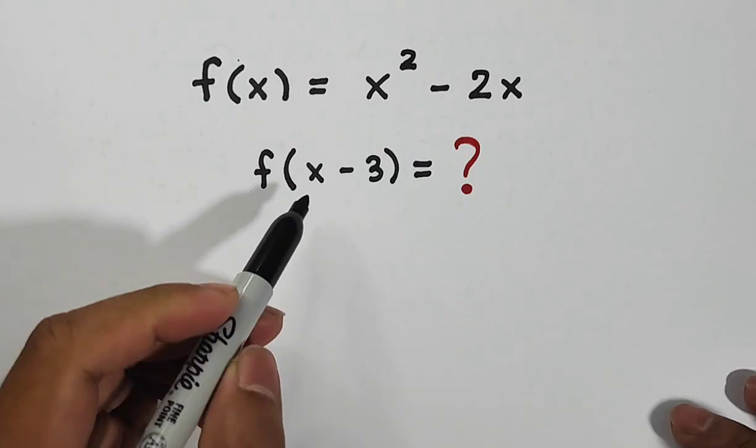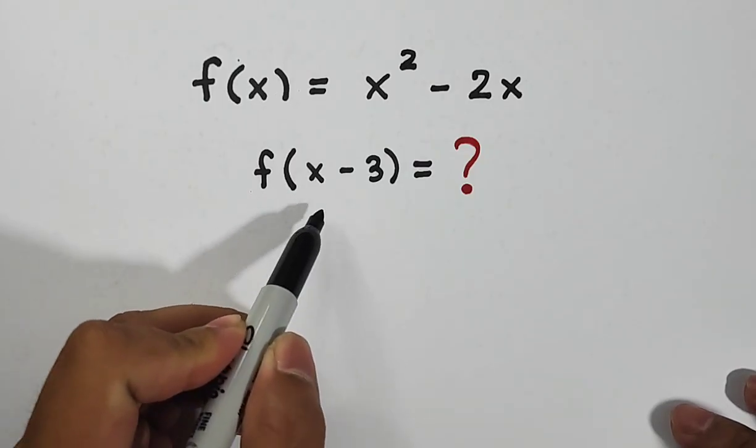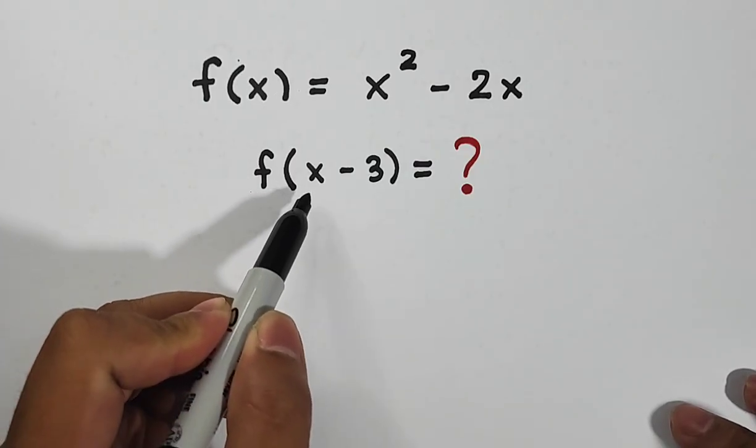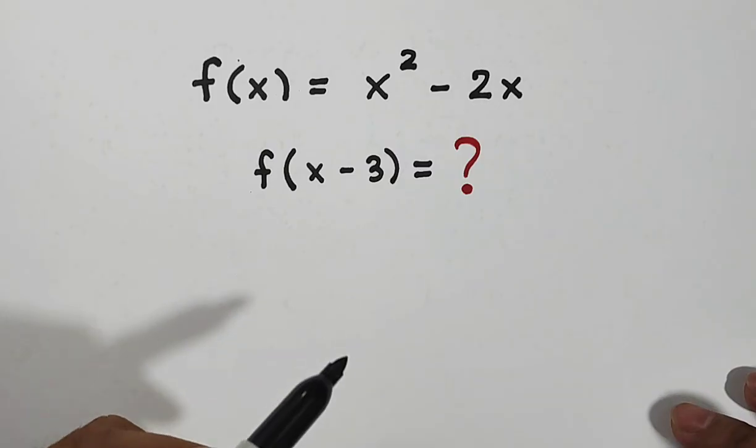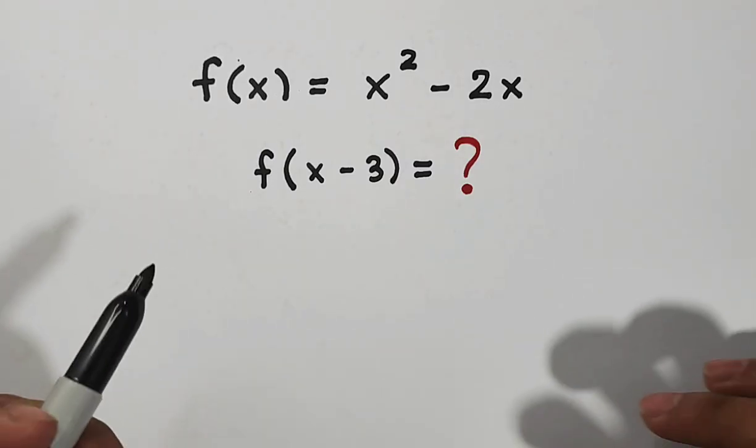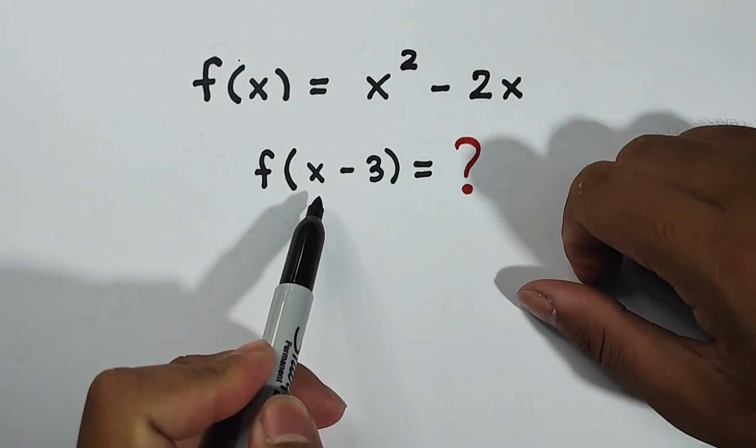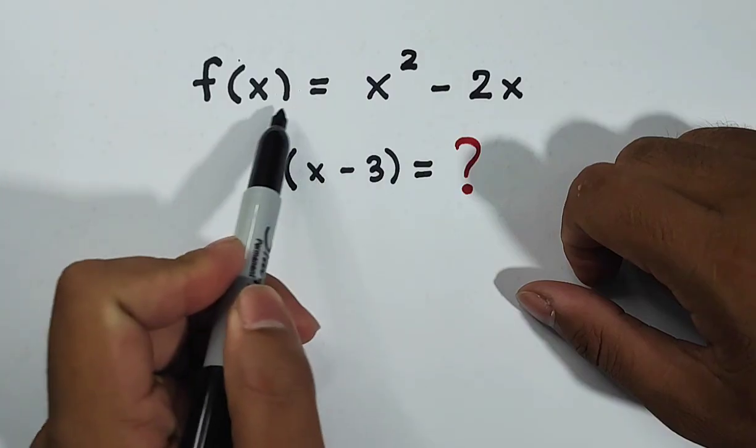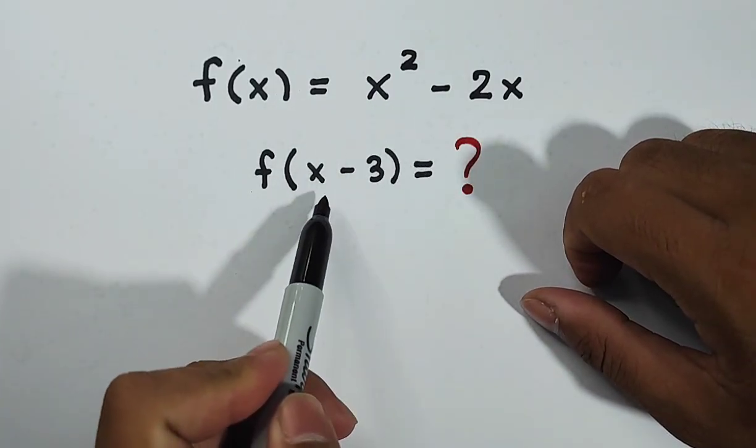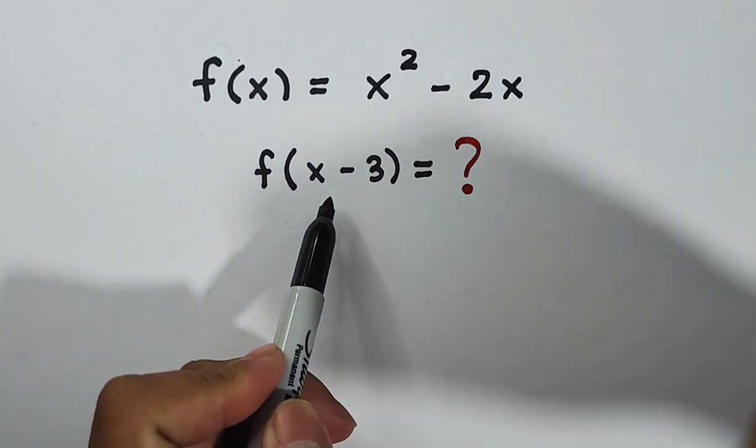Here guys, in this kind of notation, your input here is x minus 3. What do I mean by the input? Meaning you will replace the variable x from the original function using x minus 3.